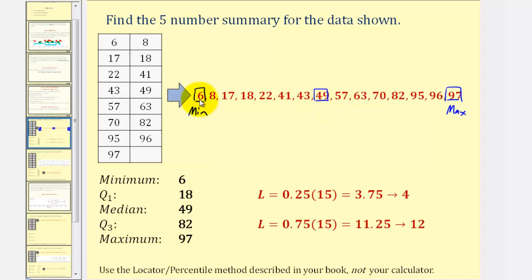There are seven values below this, seven values above this. Therefore, this is the median. And then finally, to find the quartiles, we'll begin with Q1. So we find L equals 0.25 times 15. This gives us a decimal 3.75, which we round up to the next whole number of four. The data value in the fourth position will be Q1. So 18 is quartile one.